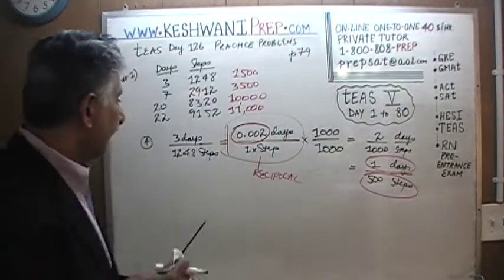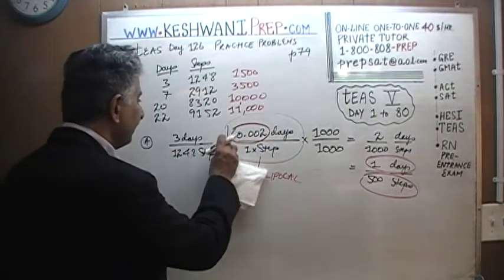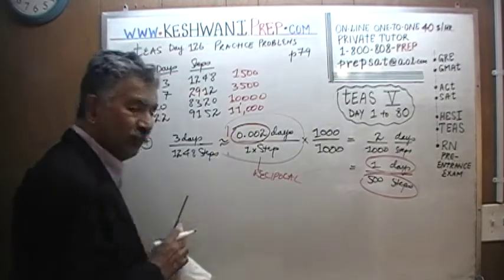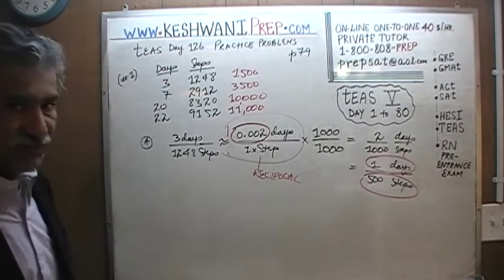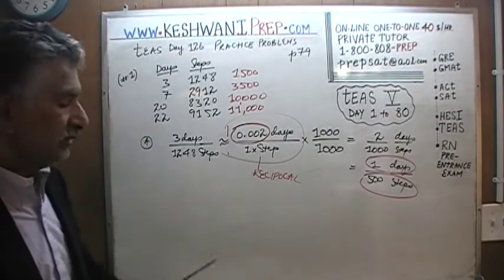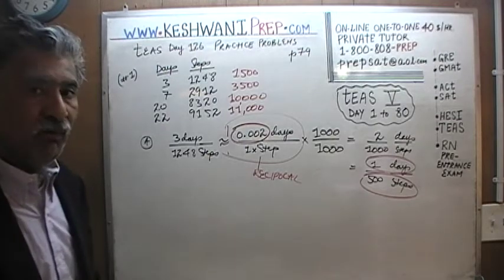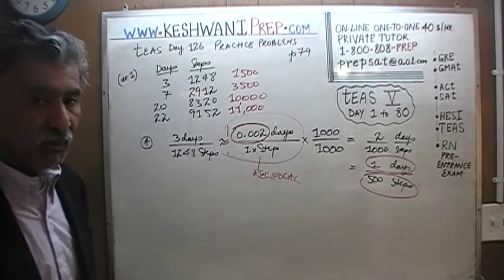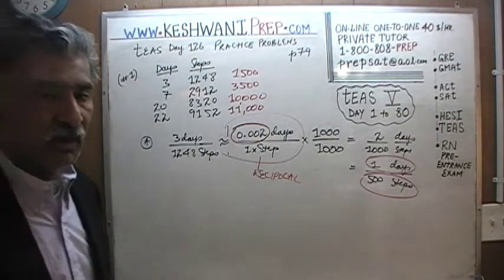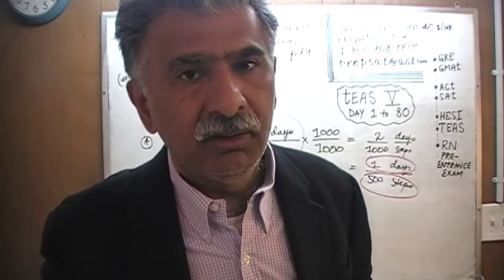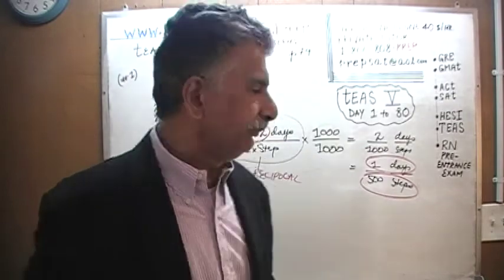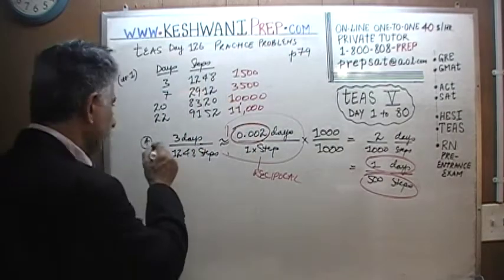This would have been correct if they had said approximately equal to. So that's one thing wrong with it. The second thing wrong with this answer choice is that the information they are giving us is the reciprocal of what we are actually looking for. We are not looking for how many days it takes her to take one step; we are interested in how many steps she takes in one day. Answer choice A does not apply.